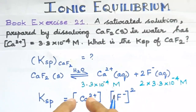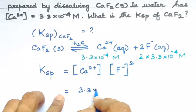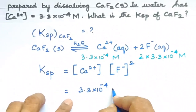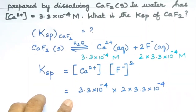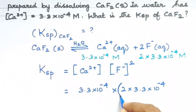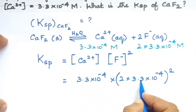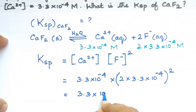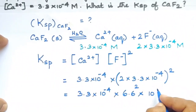Substituting the values: calcium ion concentration is 3.3×10⁻⁴ and fluoride ion concentration is 2×3.3×10⁻⁴. So Ksp = (3.3×10⁻⁴) × (2×3.3×10⁻⁴)². We square the fluoride ion concentration term: (2×3.3) = 6.6, and (6.6)² is calculated.